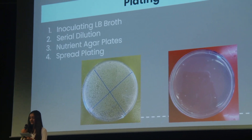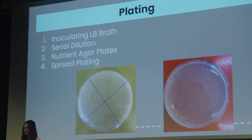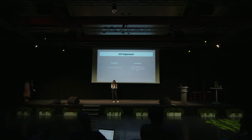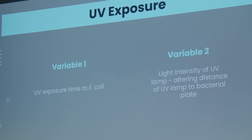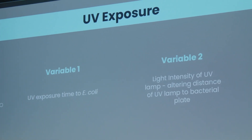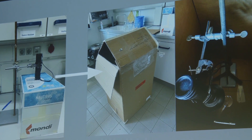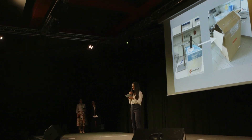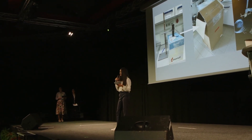I inoculated my agar plates with 0.5 cm³ of the diluted inoculum. I altered two variables when exposing the E. coli plates to UV light: firstly, exposure time, and secondly, light intensity by altering the distance between the UV lamp and the bacterial plates, each with its own controlled trials. I constructed a large UV light box for bacterial exposure. After UV exposure, the plates were incubated for 24 hours at 30 degrees Celsius before colonies were counted.